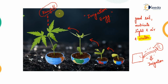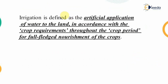To tackle this, man has developed its own way, which is irrigation engineering. Basically, the scientific application of water to crops or plants is known as irrigation engineering. So looking at the actual definition: irrigation is defined as the artificial application of water to the land in accordance with the crop requirements.